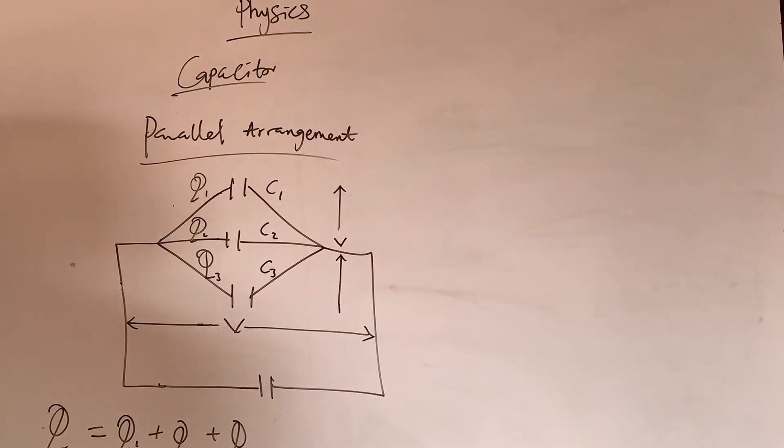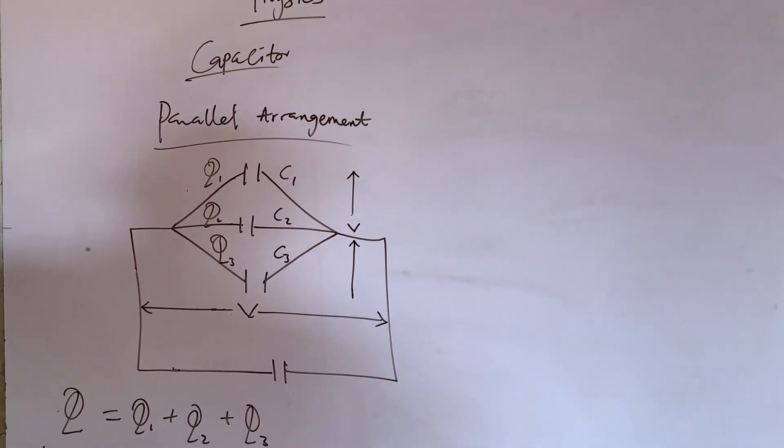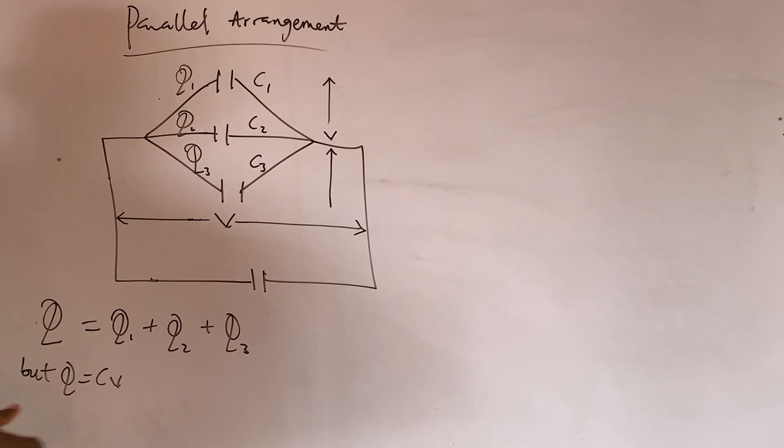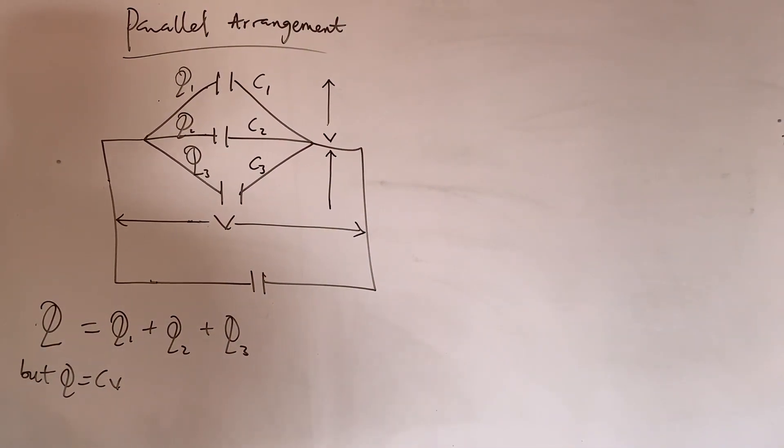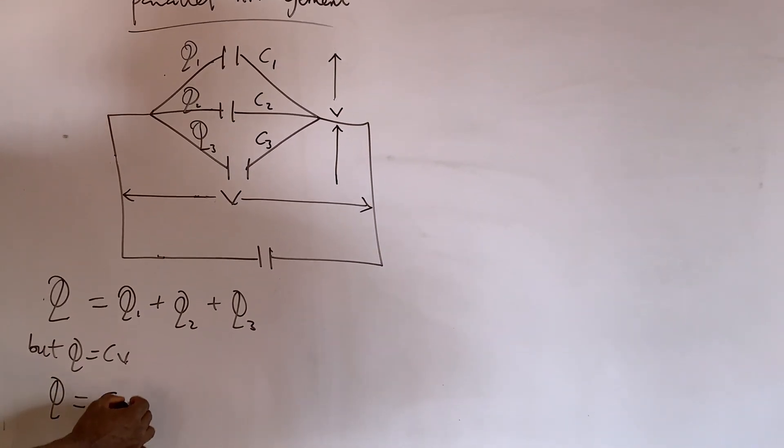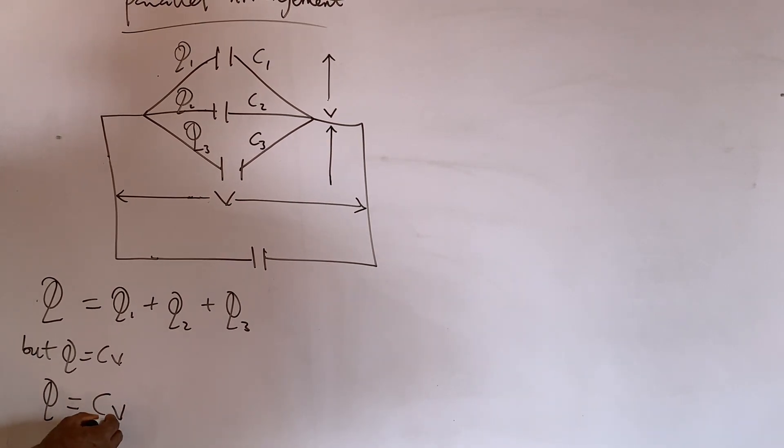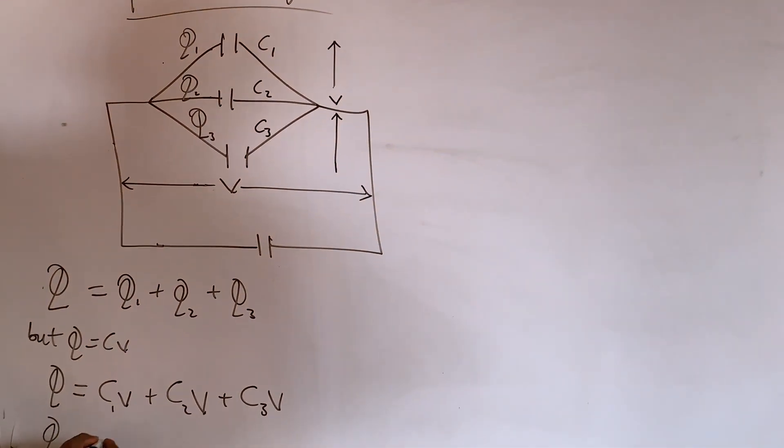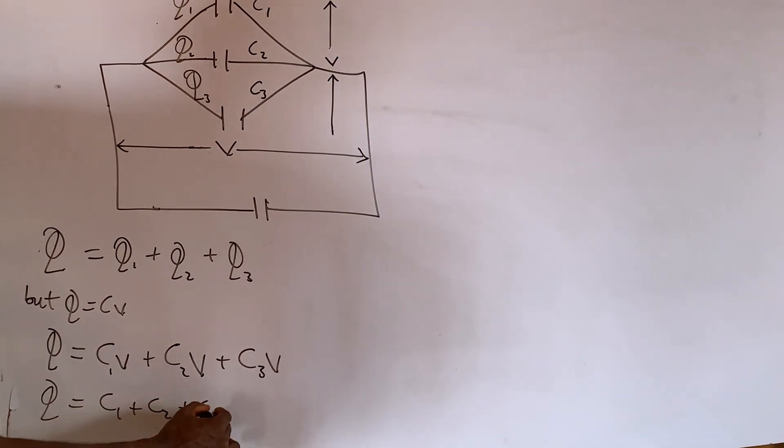Did you understand? Q is equal to CV. What is Q? Quantity of electricity. C? Capacitor. V? Potential difference, or we call it volts. Since Q is equal to CV, what do you do? Q equals to C1V plus C2V plus C3V.